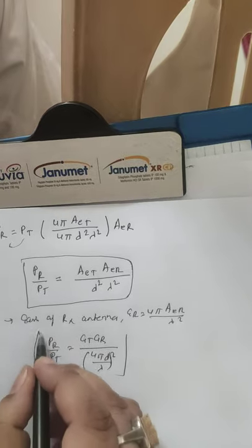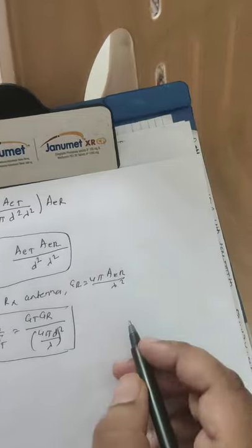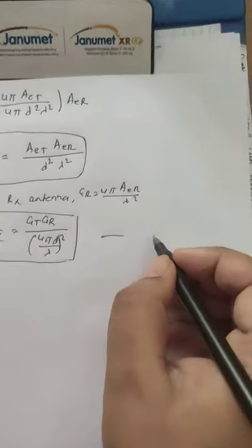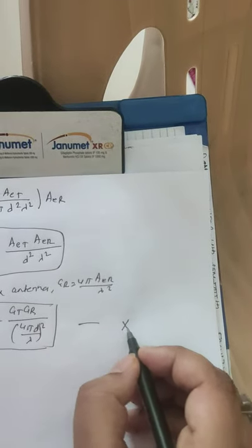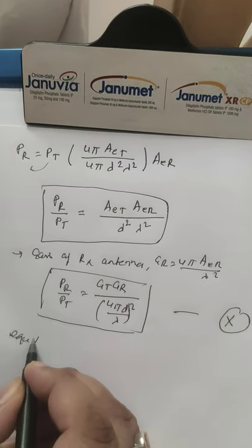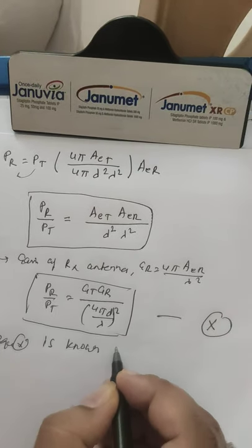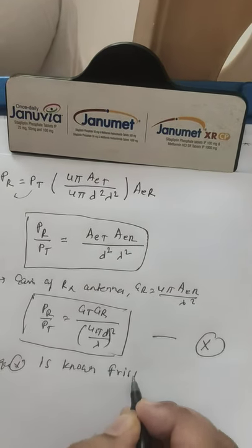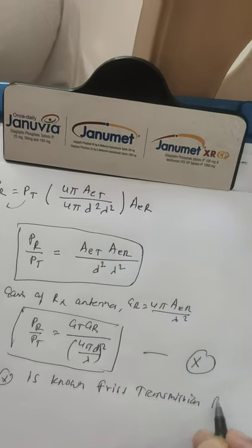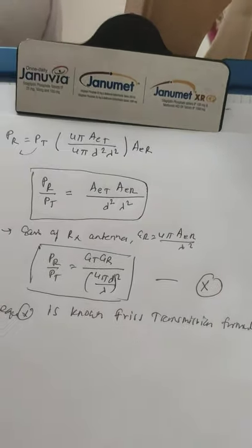This is our main equation — known as the Friis transmission formula: PR/PT = Gt × GR × (lambda / 4πD)². This is the Friis free-space transmission formula.